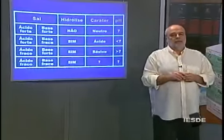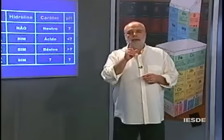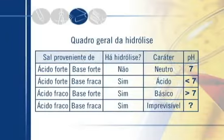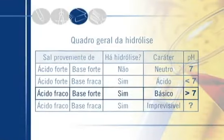Vamos inverter a situação. Imagine agora que quem é forte é a base de origem: o ácido é fraco, a base é forte. Há hidrólise? Sim, claro que há hidrólise, por culpa do ácido fraco. Quem predomina? A base. A base é forte e o ácido é fraco, logo o caráter da solução será básico, e solução básica tem pH maior do que 7.